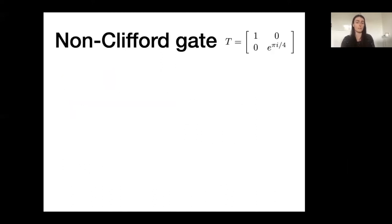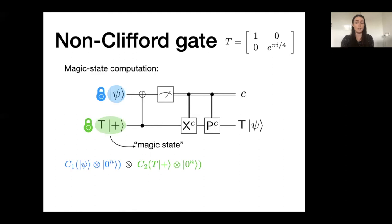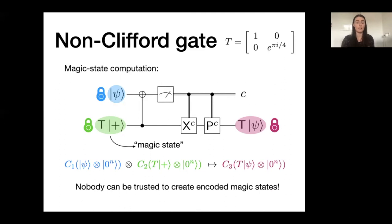Finally, the sub-protocol for a non-Clifford gate: the T gate. The protocol hinges on magic state computation. If you start with some quantum state psi and a fixed state T of plus — called a magic state for the T gate — and execute a circuit consisting of a CNOT, a measurement, and a classically controlled Clifford conditioned on the measurement outcome, you end up with T applied to psi. For all these operations — CNOT, measurement, Clifford — we already have protocols. So if we have an encoding of psi and an encoding of the magic state, we can produce an encoding of T applied to psi by chaining together the sub-protocols. The issue is that nobody can be trusted to honestly create encoded magic states.